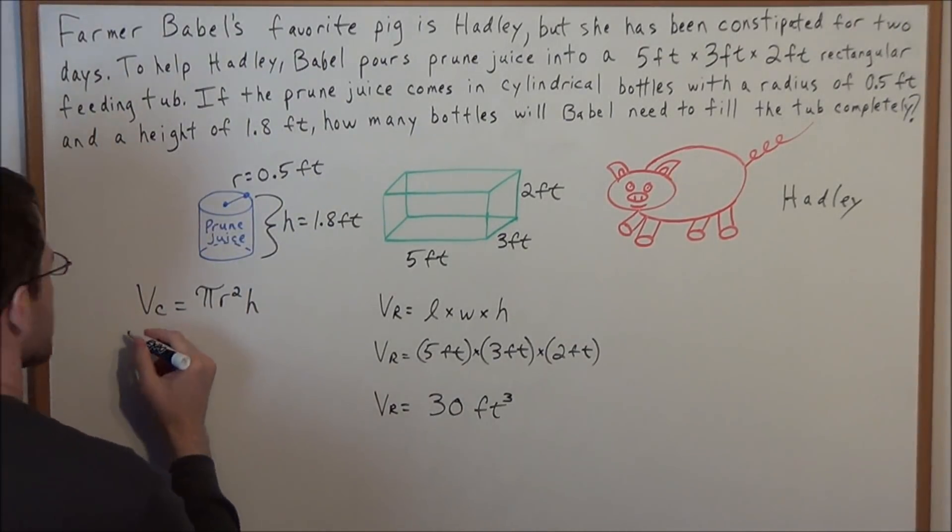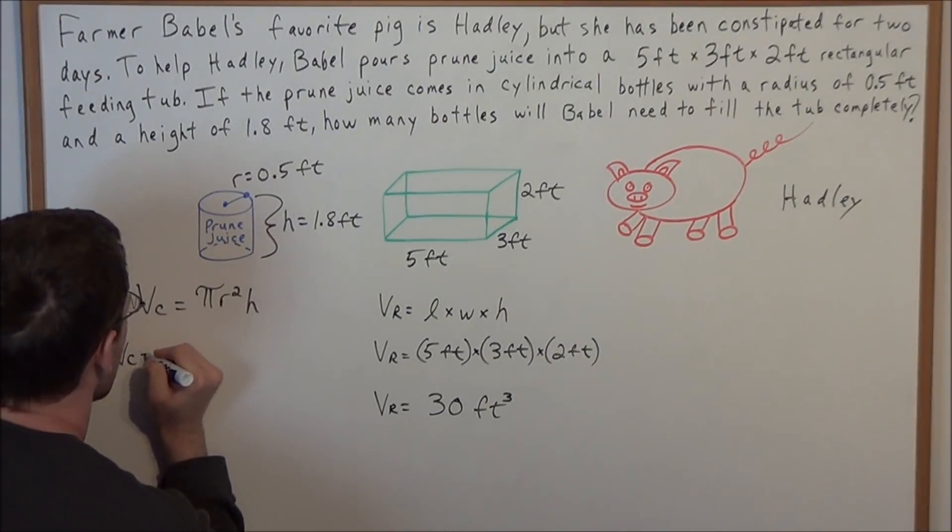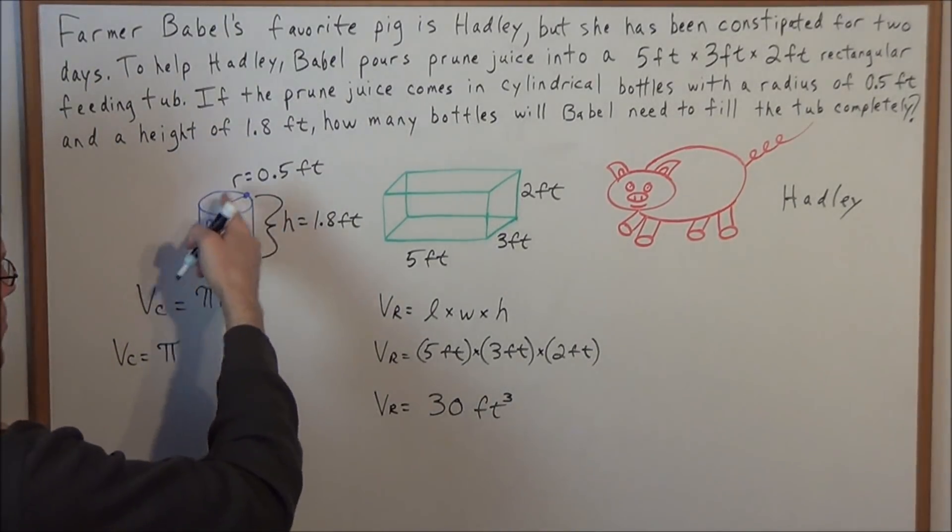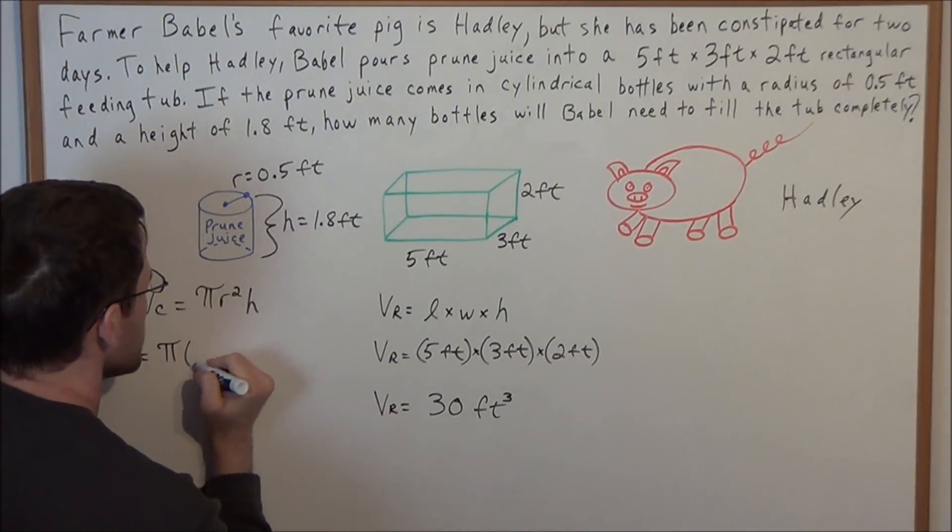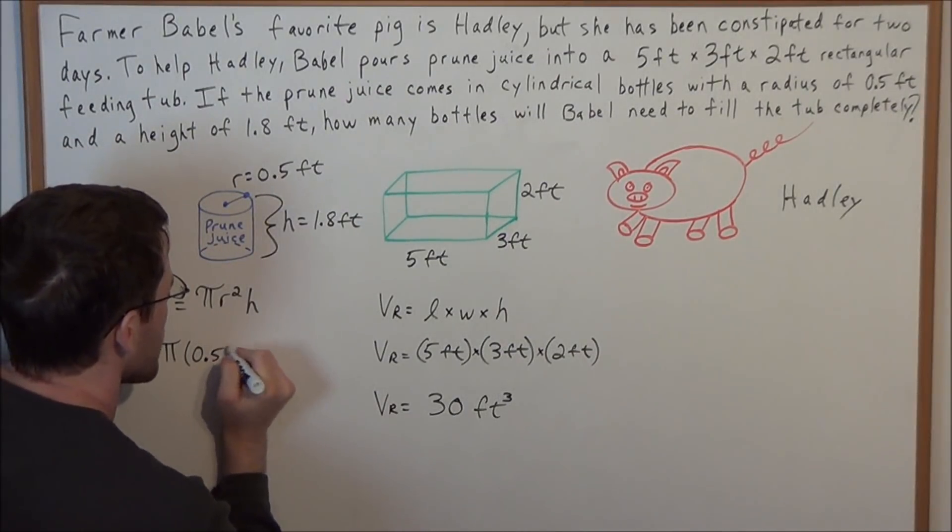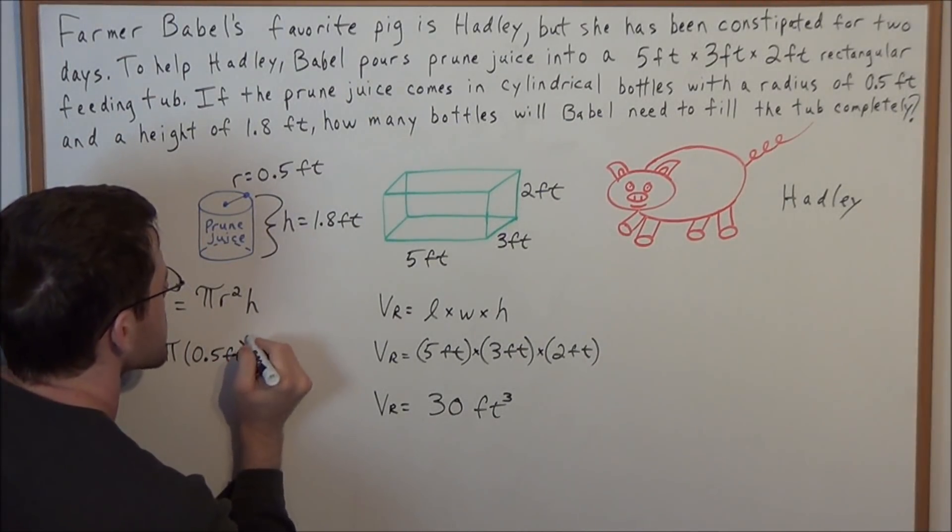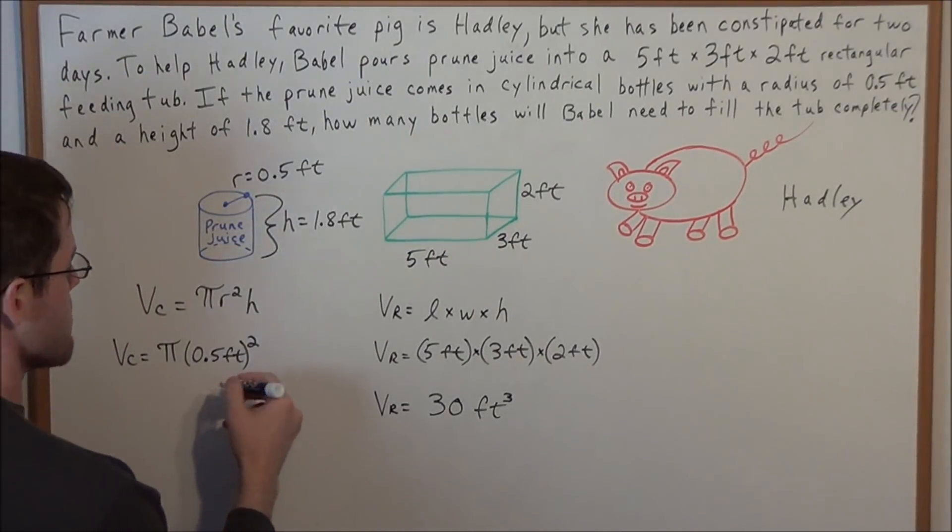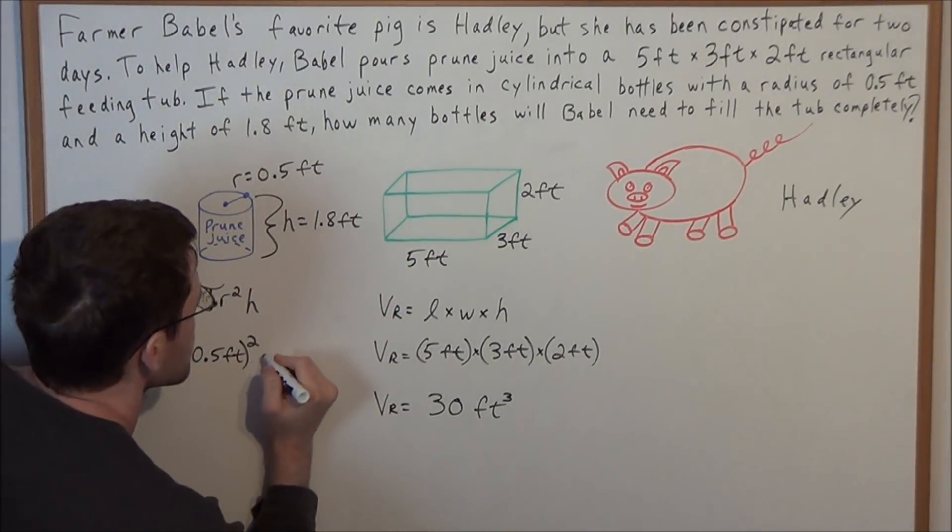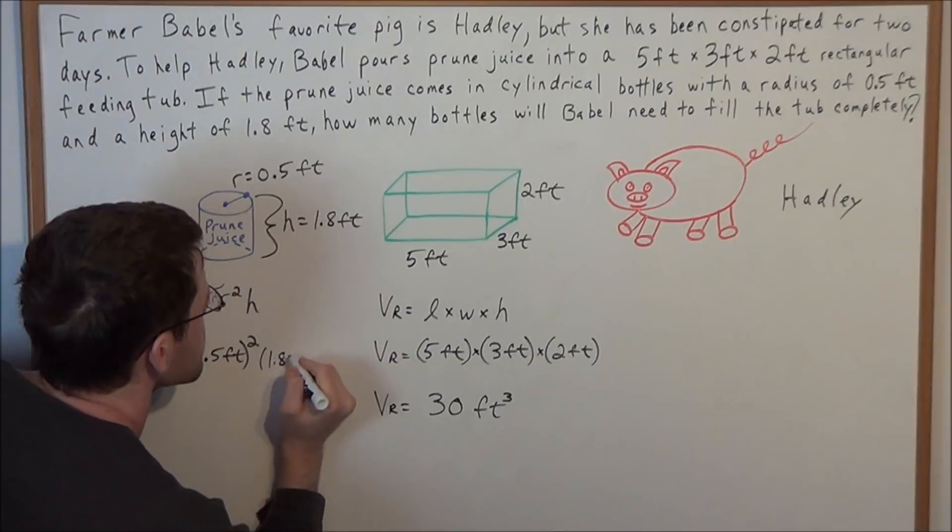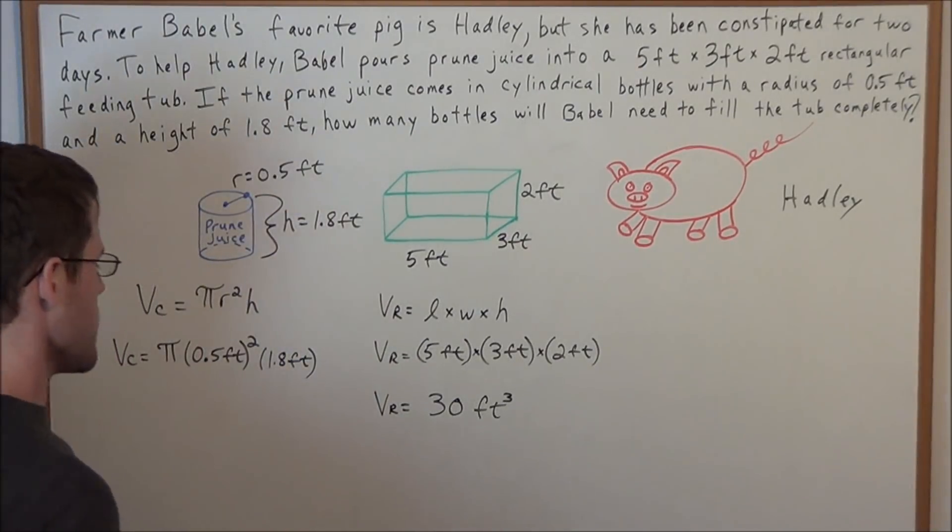So now we have the volume of this cylinder is equal to pi times the radius squared, but the radius in this case is 0.5 feet. So we're going to square this quantity and multiply it by the height, which is 1.8 feet.